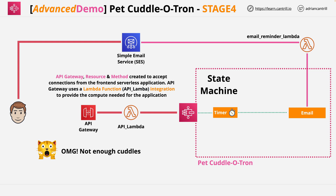You've created the supporting Lambda function, given it the permissions it needs, created the API Gateway, created the resource, created the method, and integrated it with the supporting Lambda function. That's now the endpoint that our client application will use to connect to this serverless application. Go ahead and complete this video, and I'll look forward to you joining me in the next part.